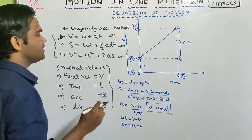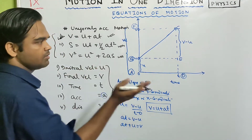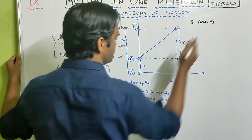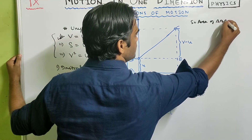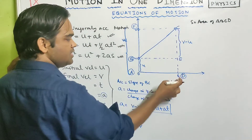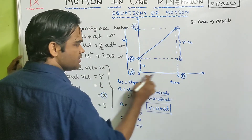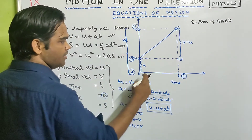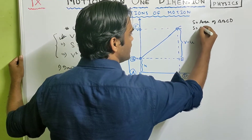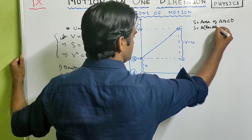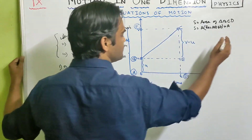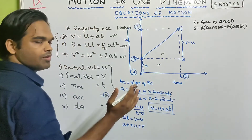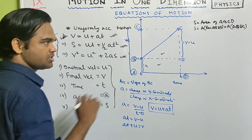Now, distance is the area between the line and the x-axis. So distance s is the area of trapezium ABCD, where AB is parallel to CD and AD is the perpendicular distance between the two parallel lines. We can split this into a rectangle ABED plus a triangle BEC.